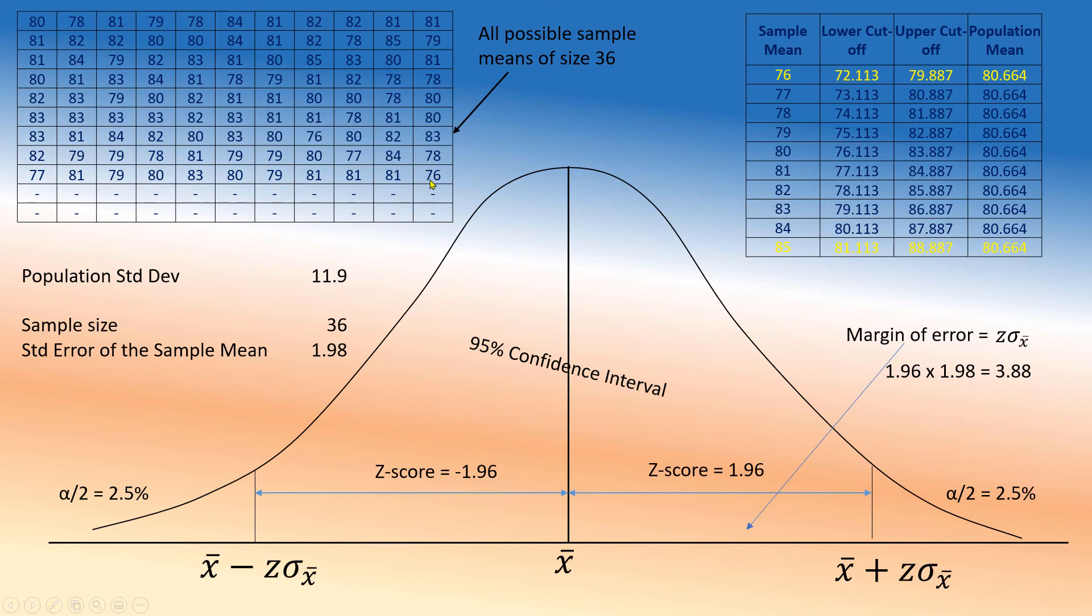So to you, the population mean is 76 plus minus 3.88. So you're going to say, I'm 95 percent confident that the population mean lies between this number and that number. And guess what? It is 80.664. We know that because we did calculations, which means you are wrong. You missed it.